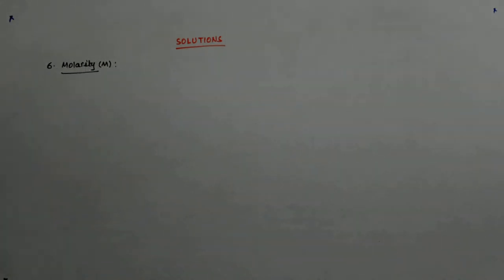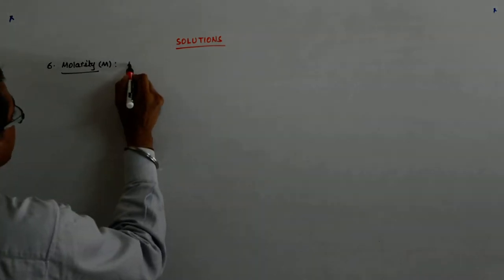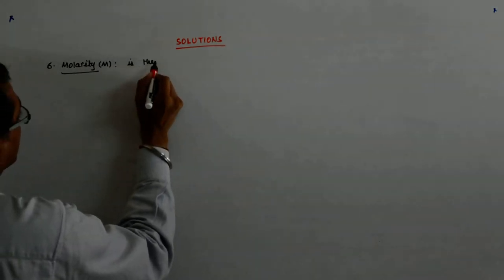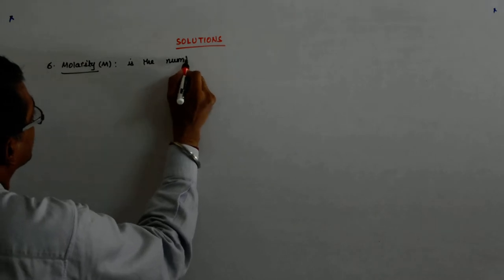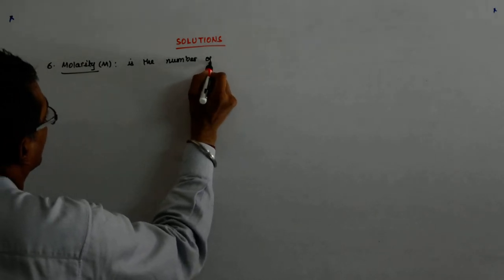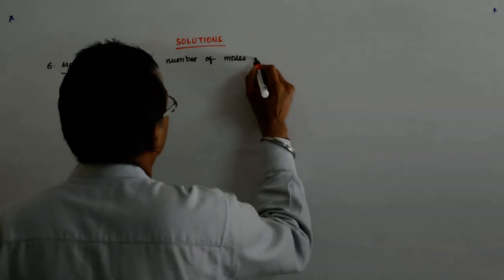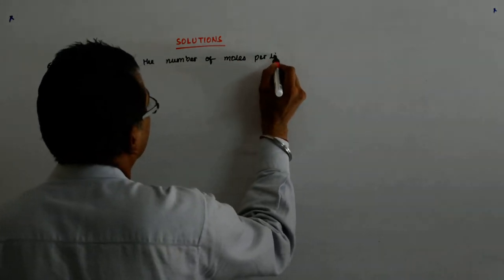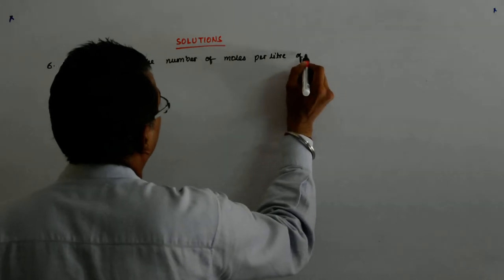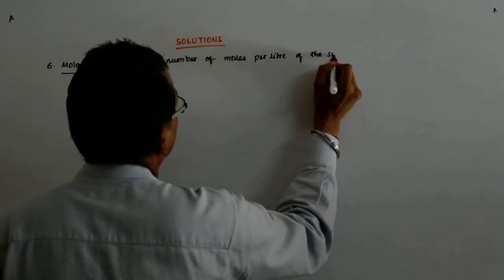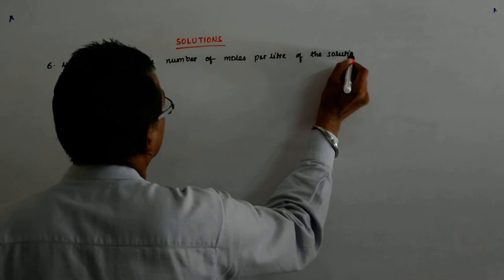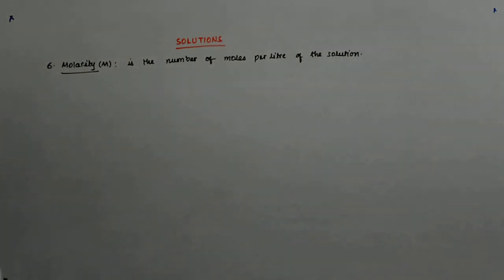It is denoted by capital M and is defined as the number of moles per liter of the solution. Molarity is the number of moles per liter of the solution.